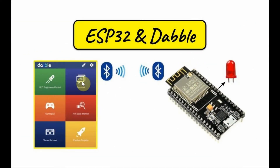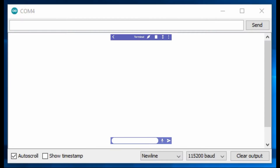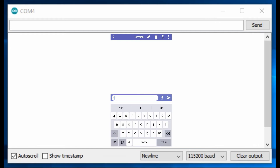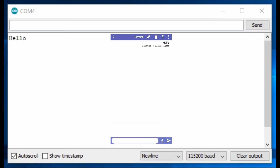The first Dabble application I'll be demonstrating is the terminal application, which lets your smartphone chat with the ESP32 in a two-way communication. Bluetooth communication with ESP32 is done via the Arduino IDE terminal.